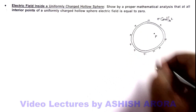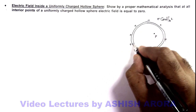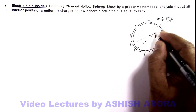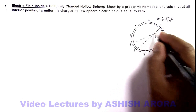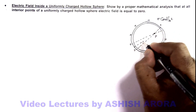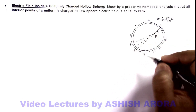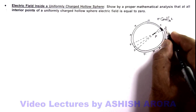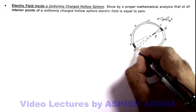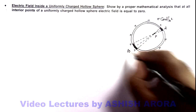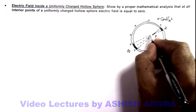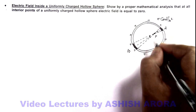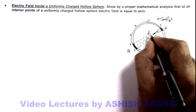We wish to calculate the electric field, so we consider two elements on the opposite sides of point P along the diametrical line passing through point P. This is the diametrical line which passes through P, and here we consider an element A, and on the other side opposite to it we consider another element B, such that both elements are subtending equal solid angles at point P, and the solid angles subtended by these elements at point P are dω.